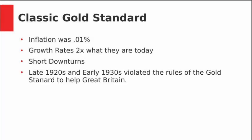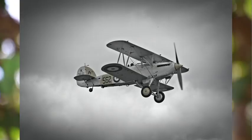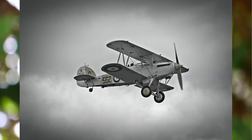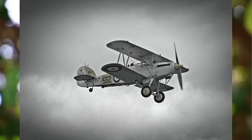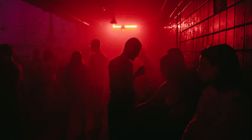There's an argument that the classic gold standard caused the Depression because there wasn't enough liquidity in the system. But during the classic gold standard, inflation was relatively low — around 0.01%. In 1789, one dollar was worth one dollar. In 1913, the year the Federal Reserve was created, one dollar was worth a dollar six. That same dollar is worth three cents today. Under the classic gold standard, growth rates were double what they are today and downturns were short. What happened in the late 1920s is that the U.S. violated the terms of the gold standard to bail out Great Britain because of World War I. This actually caused the disruption in the monetary markets — not the gold standard itself.